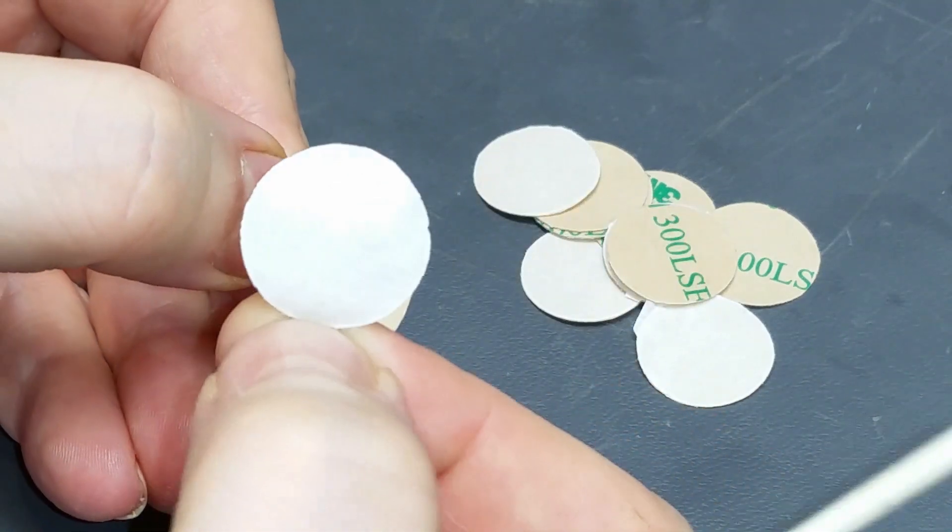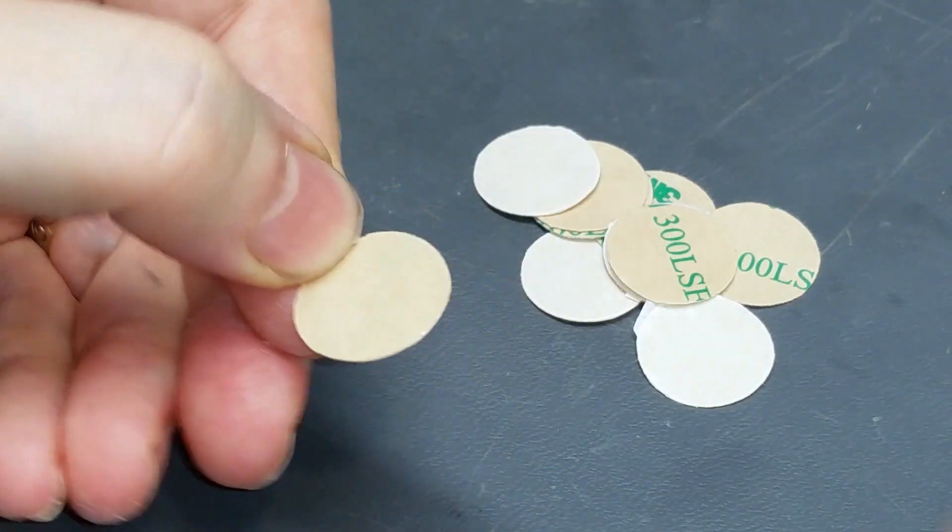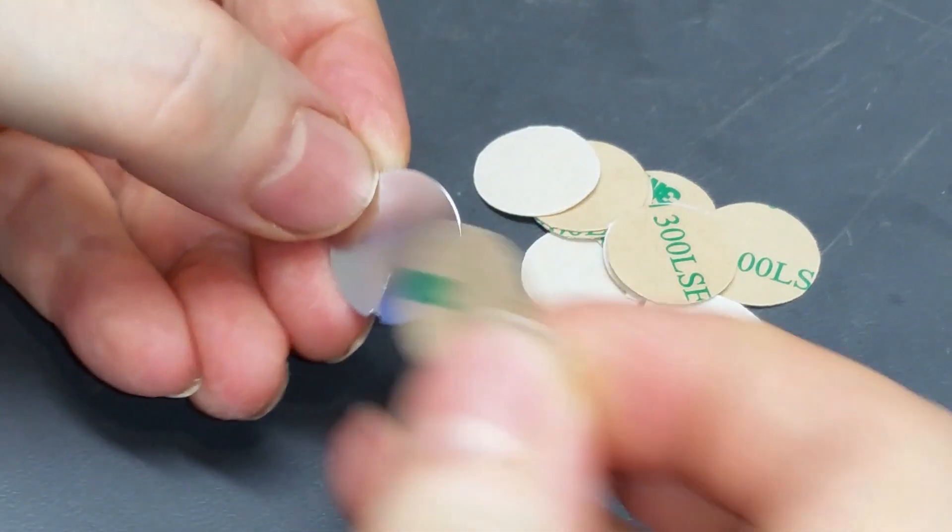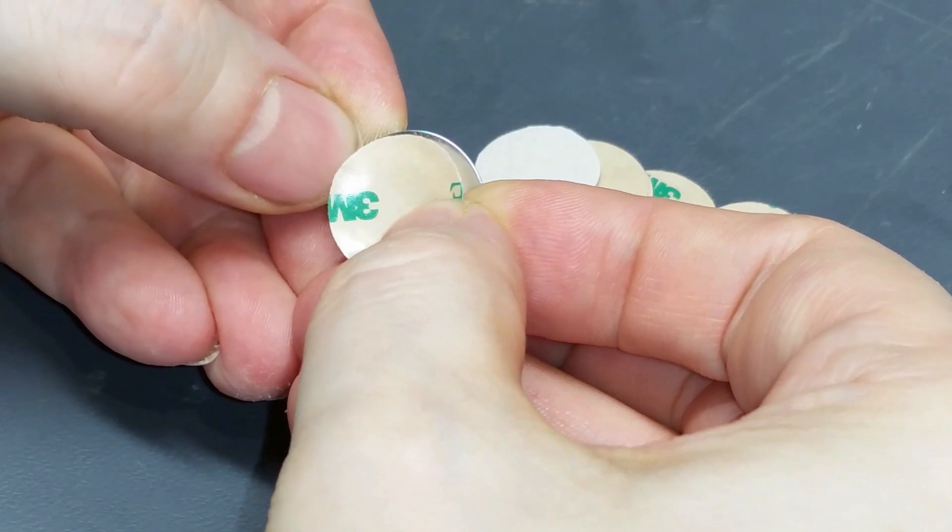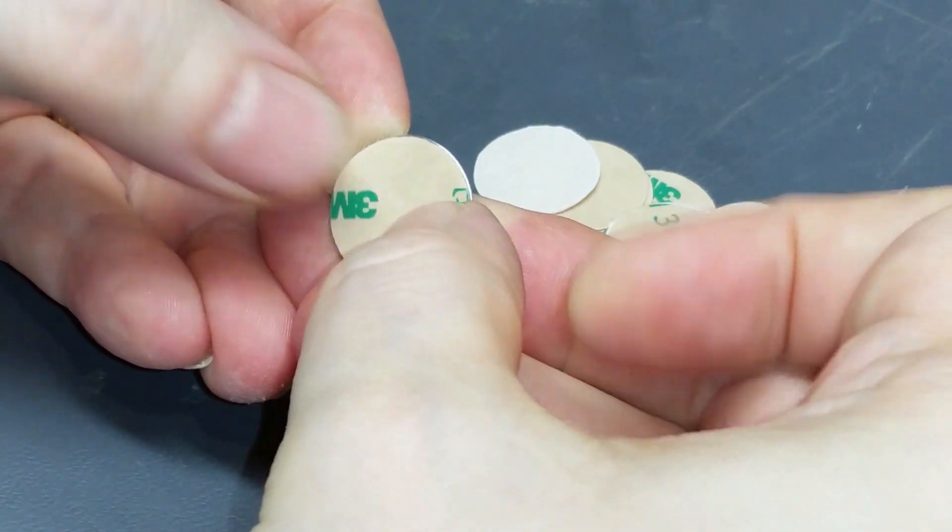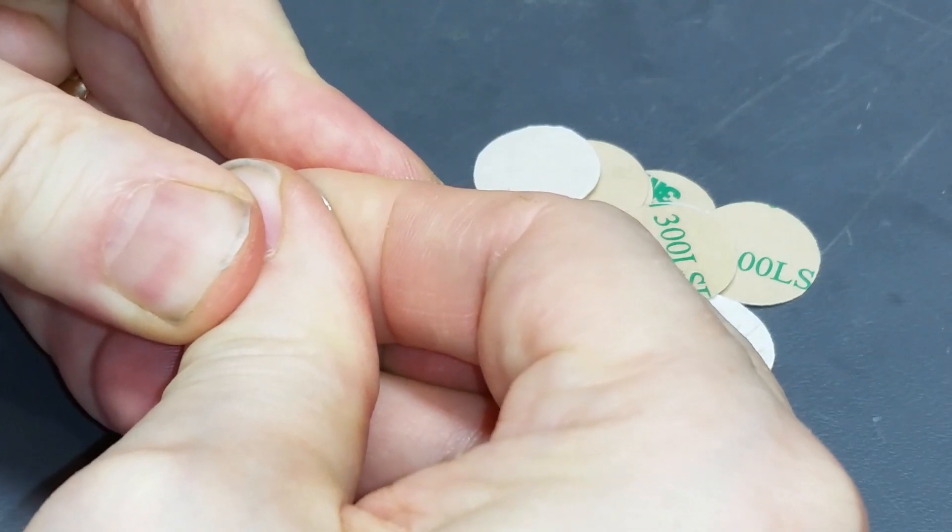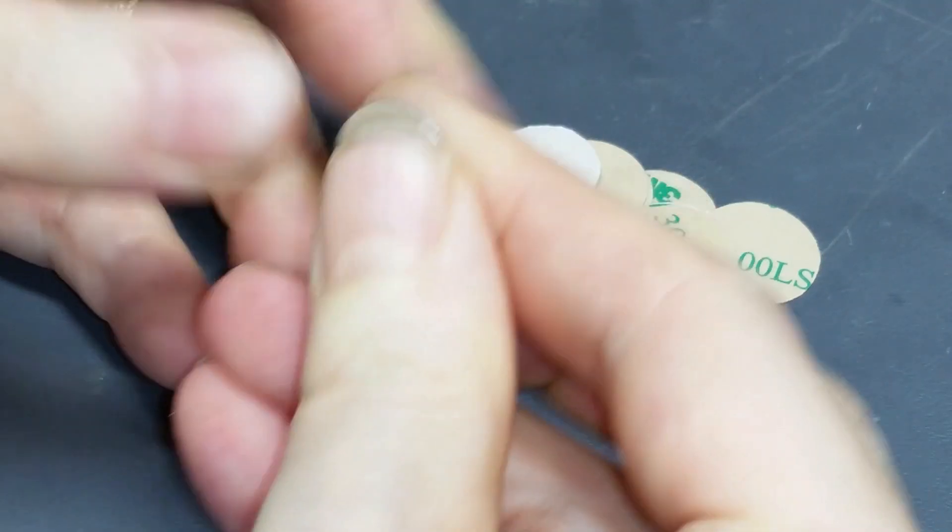So the protective tape came off. There's adhesive on this side. Now what I want to do is I want to line it up, stick it right on that side. Press it down for a few.